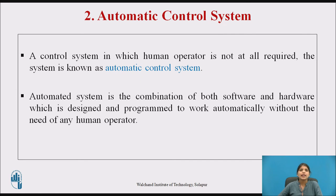Now let us see the automatic control system. An automatic control system is a system in which a human operator is not required at all. In the automatic method, the human is replaced by a controller, increasing accuracy. It is a combination of software and hardware designed and programmed to work automatically without any human operator.